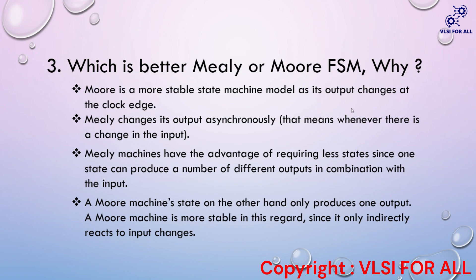The main problem with Mealy is that it depends both on the input and the present state. If there is a change in the input, it automatically causes changes in the output, which may trigger undesired effects in the output — not helpful in practical situations. Even though Mealy has fewer states and Moore requires more states, Moore is more stable because it doesn't change its output continuously. The output changes only at the clock edge.